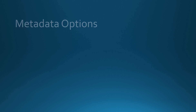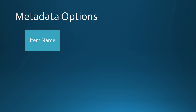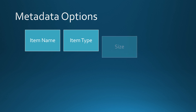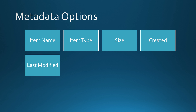Let's take a look at the different metadata options available for this activity. First, we have item name, which retrieves the item name. Then item type, which returns whether the item is a file or folder. Then size, which returns the size of the item. Then created, which returns the created timestamp of the file or folder. And then last modified, which also returns a timestamp indicating when the file or folder was last modified.